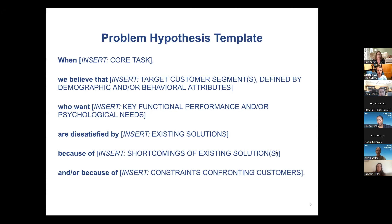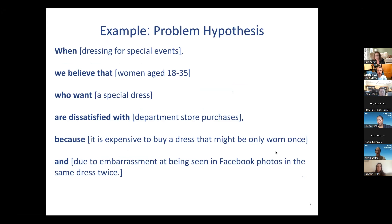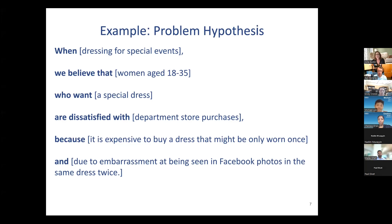In practice, it looks something like this: when dressing for special events, we believe that women aged 18 to 35 want a special dress. They're dissatisfied with department store purchases — it's expensive to buy a dress that might only be worn once — and due to embarrassment at being seen on Facebook photos with the same dress twice. Who is this? That's Rent the Runway. It's a starting point as you're digging into your problem area, and you'll go back and revisit it often.